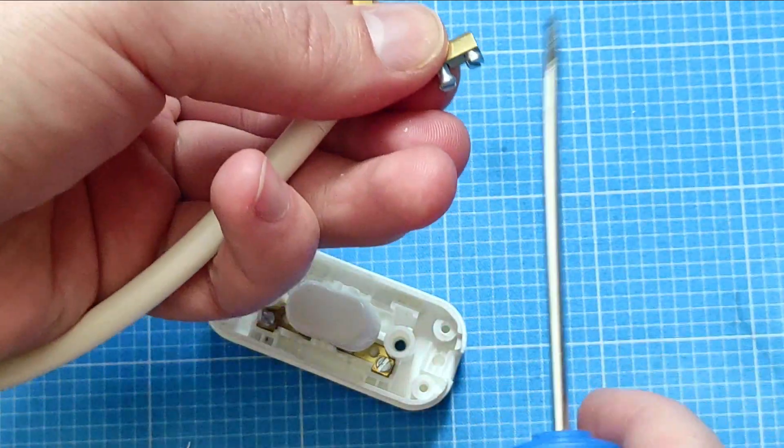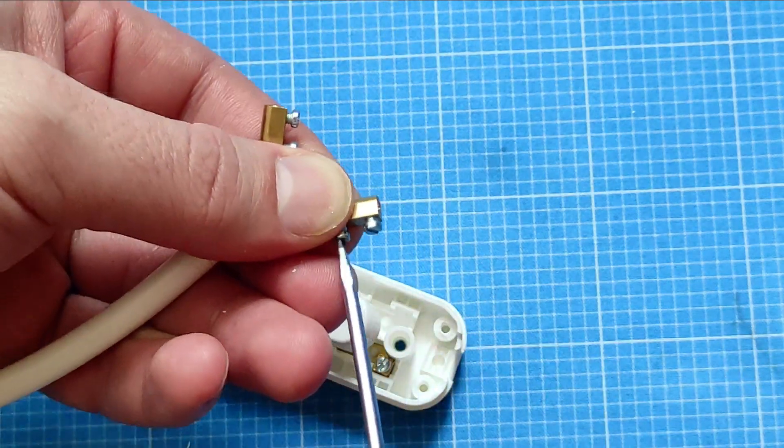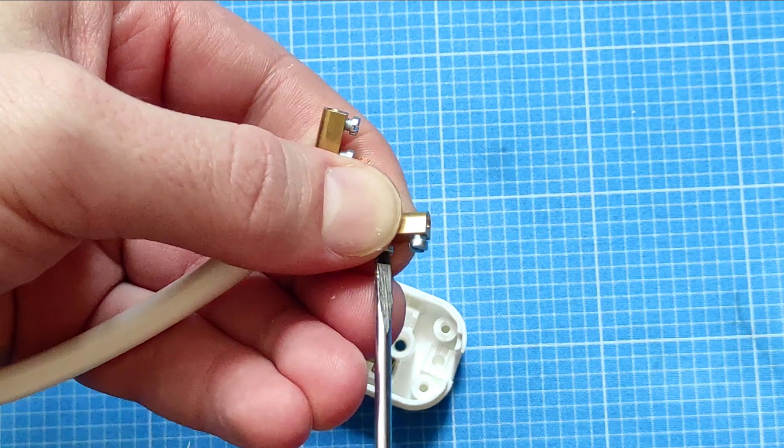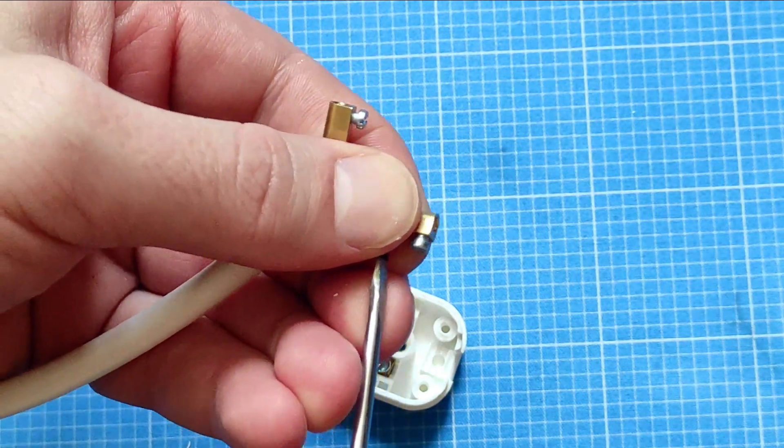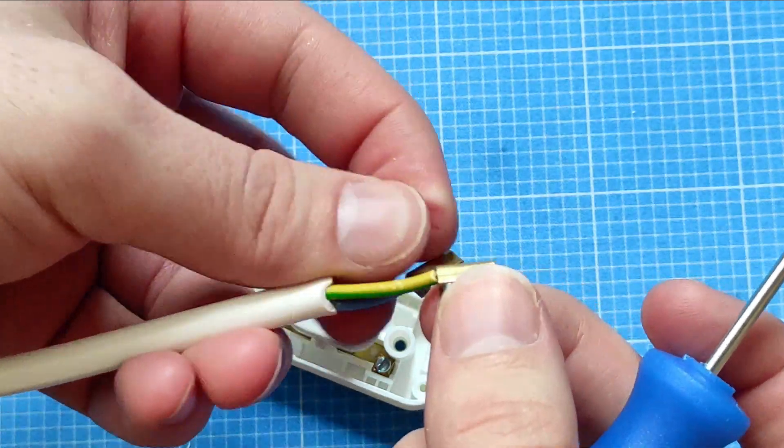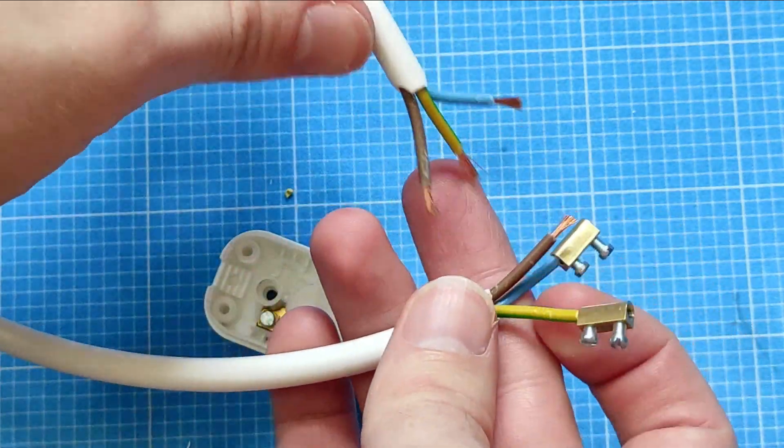And make sure that the screw is clamping down on the copper and not on the insulation part, because that might be a weak bond kind of, so it accidentally gets torn out later. So make sure it's going to be a strong bond.